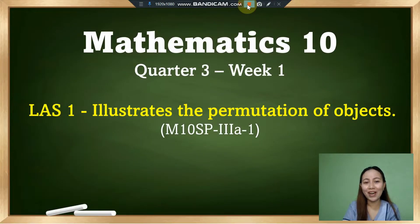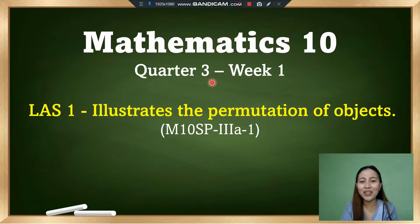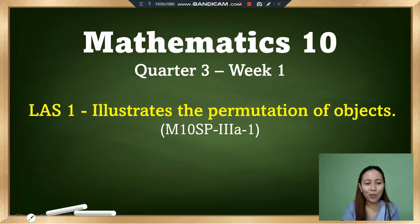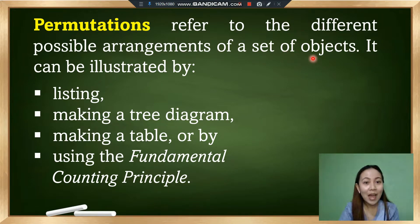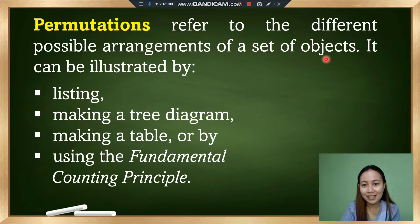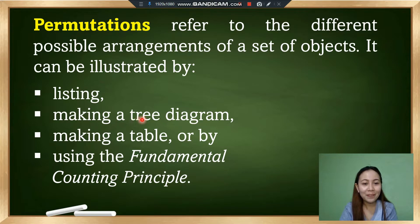This video focuses on illustrating permutations of objects, and this is the first topic for Quarter 3 of Mathematics 10. To formally start our discussion, let's define what permutation is. Permutation refers to the different possible arrangements of a set of objects. It can be illustrated by listing, by making a tree diagram, by making a table, or by using the fundamental counting principle.